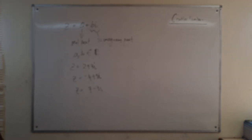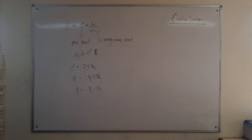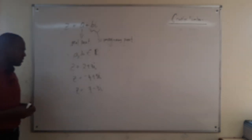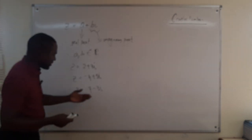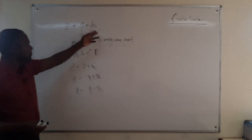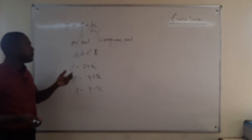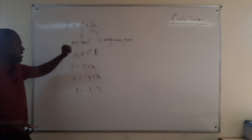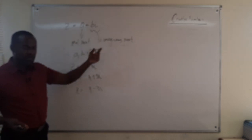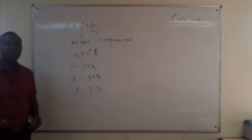According to the syllabus, we should be able to express complex numbers in the form a plus bi where a and b are real numbers, and identify the real and imaginary parts. If a number is expressed as z equals a plus bi, the real part is a and the imaginary part is bi, but importantly both a and b are real numbers.